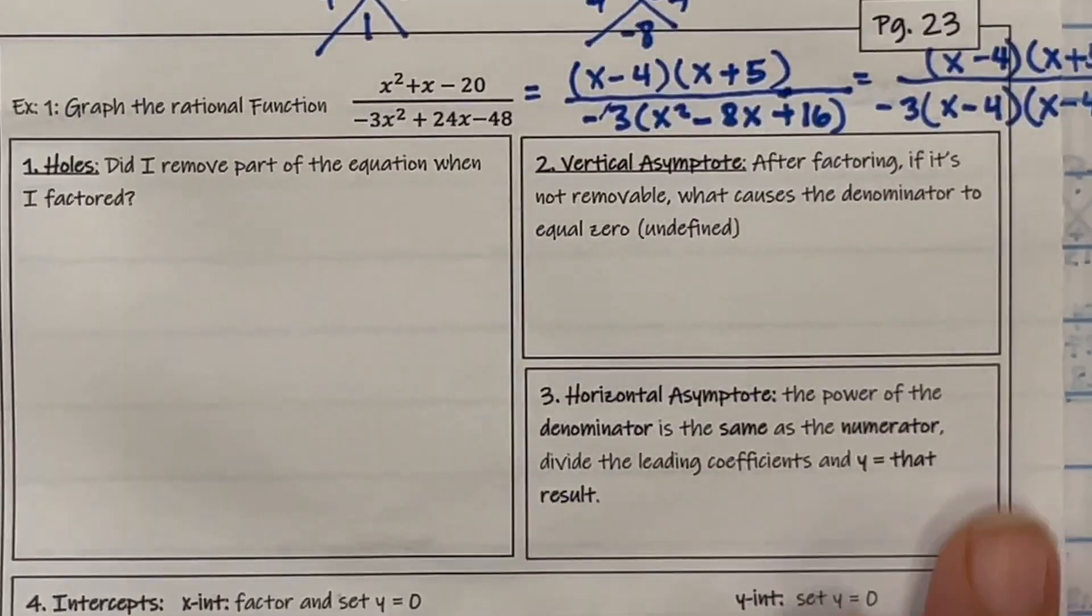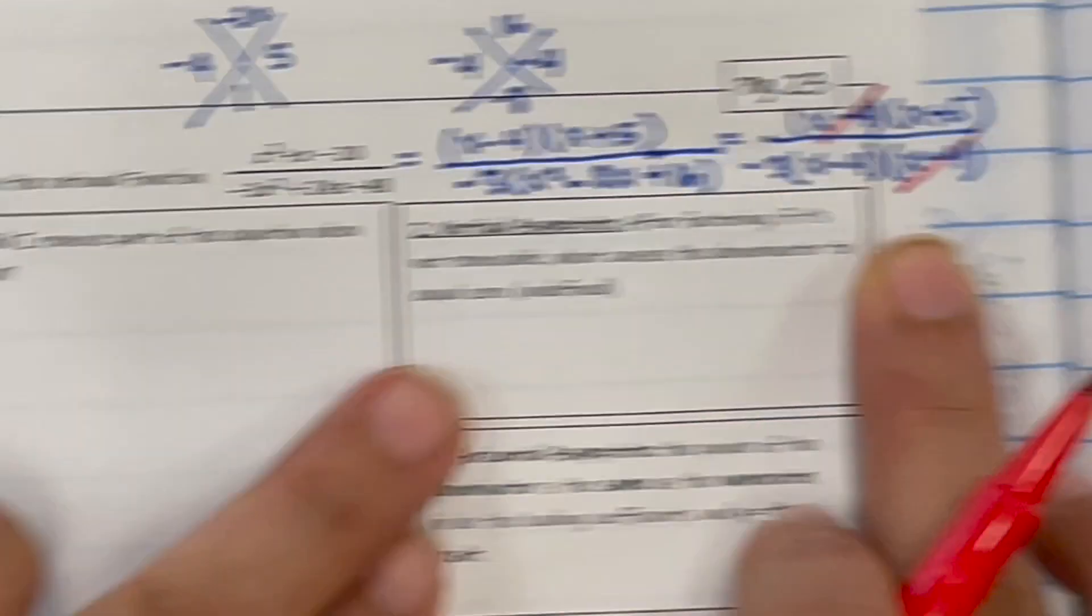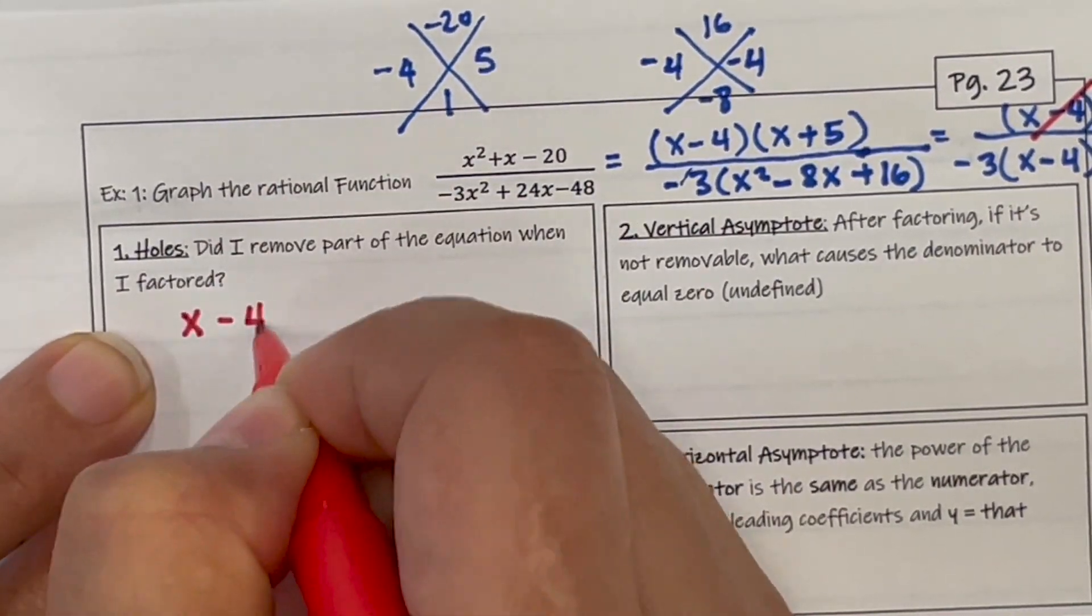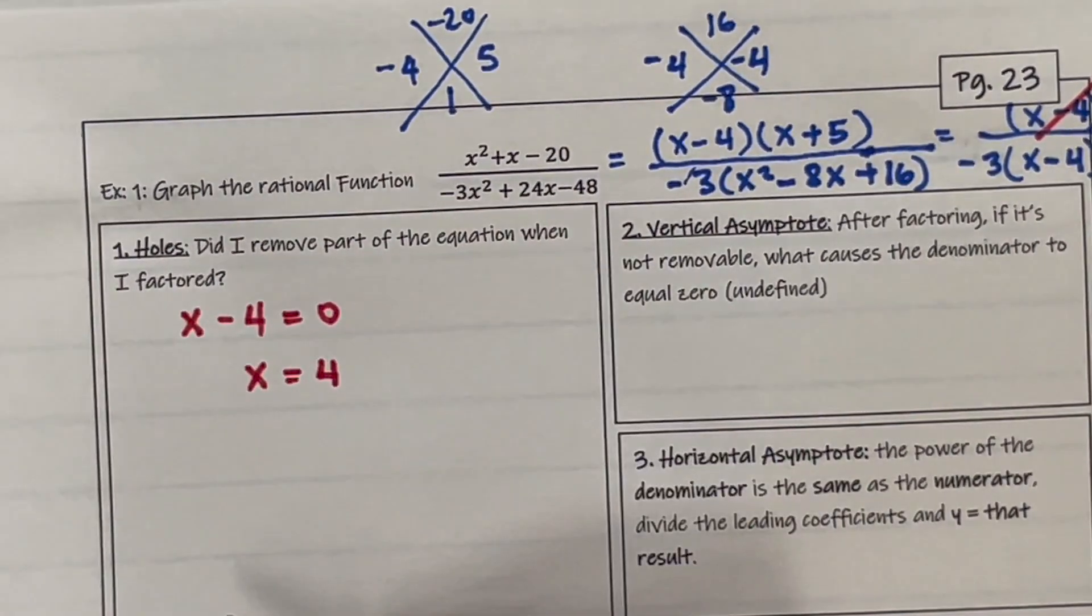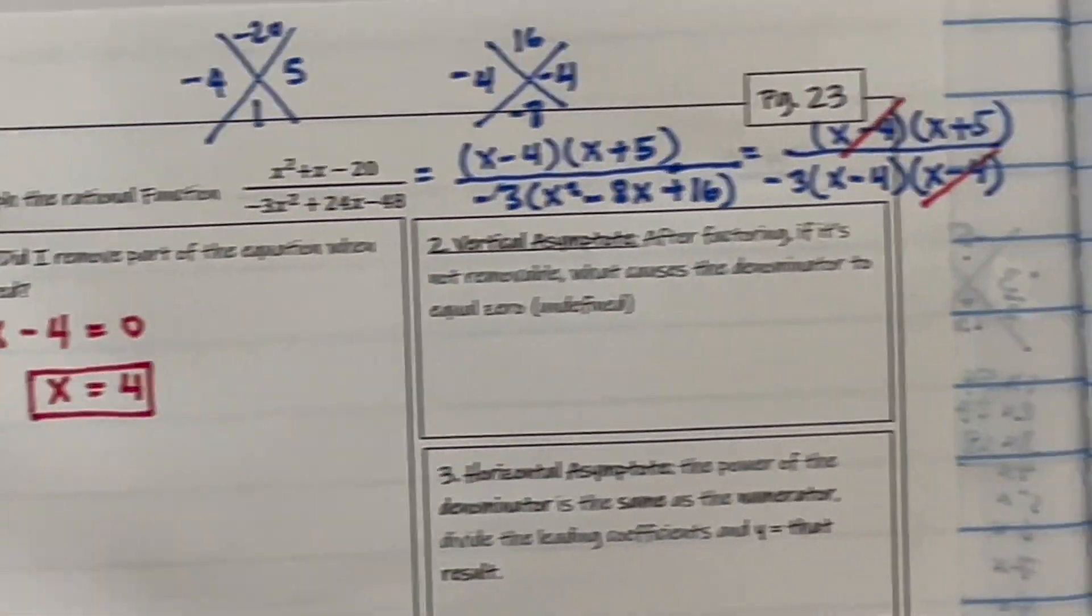So are there any holes? Did I remove any part of the equation? Yes, I just did. So x minus 4 equals 0 is going to be my hole, so x is equal to 4.